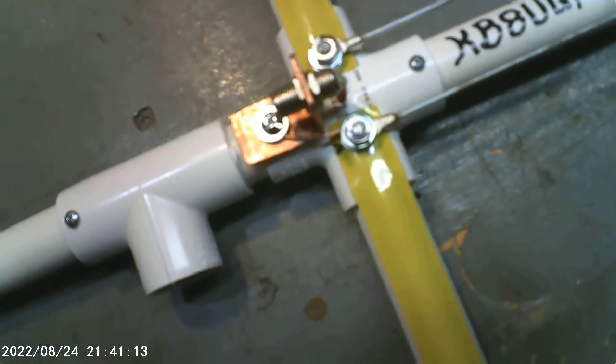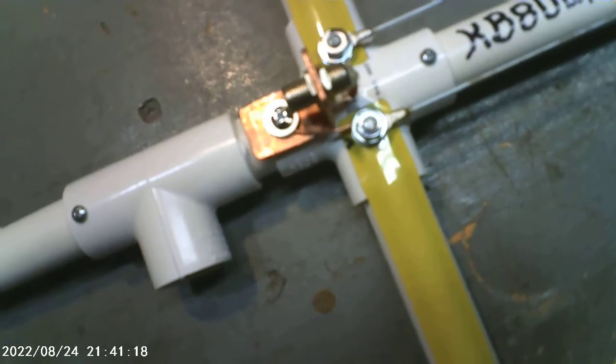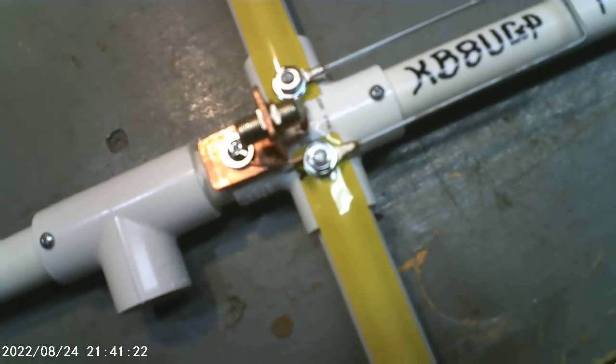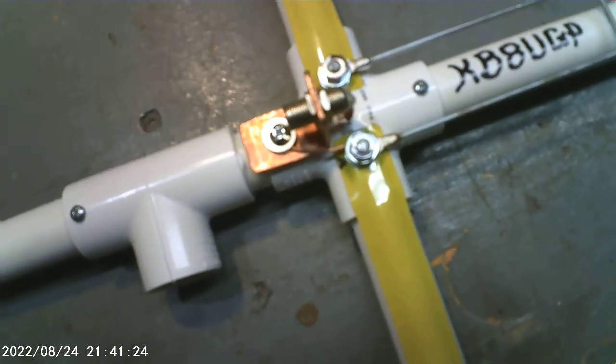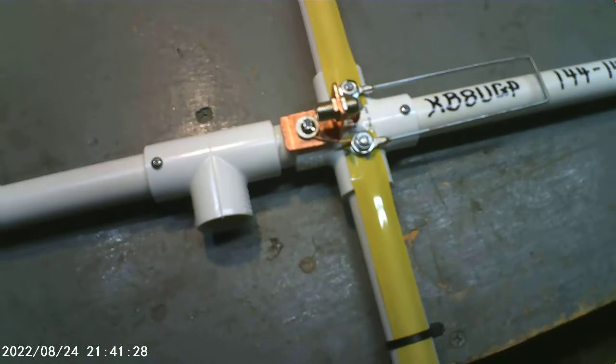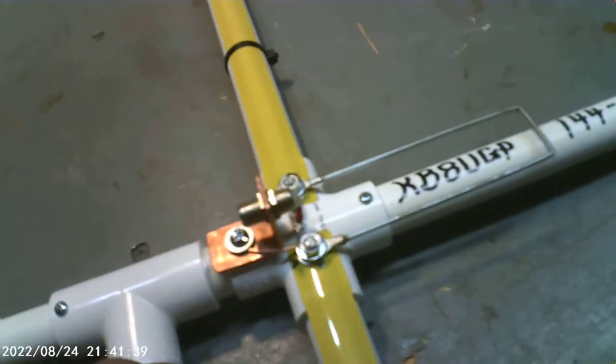I've got this thing matched 1:1 in the middle of the band, and it goes out to about 1.7 on each end from 144 to 148 MHz. In the center of the band I can get this thing down to 1.1. As you can see there, how I got that fastened on there with the ground and everything.